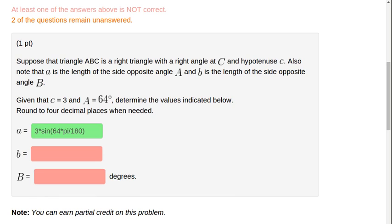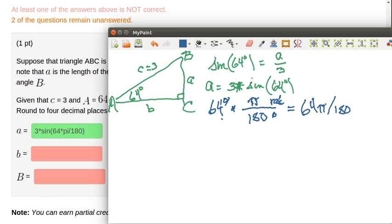Now let's quickly complete the rest of the calculations here. Furthermore, we know that the cosine of A, which I know is 64 degrees, is equal to the adjacent, which is b, over 3. So I can solve for b by just multiplying both sides of this equation by 3. And so b is equal to 3 times the cosine of 64 degrees.